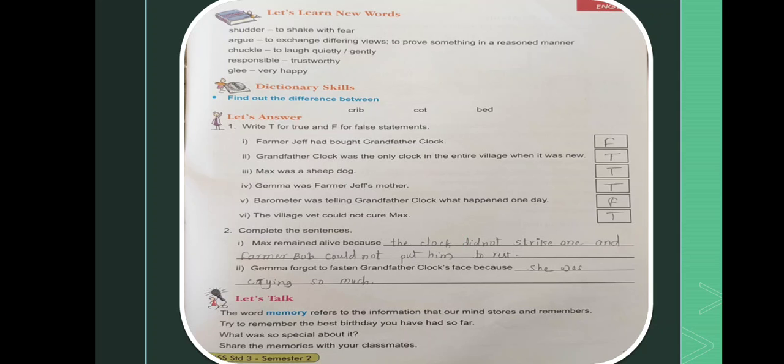Jemma was Farmer Jeff's mother. True. Barometer was telling grandfather clock what happened one day. False. The village vet could not cure Max. True. So second one, complete sentences.